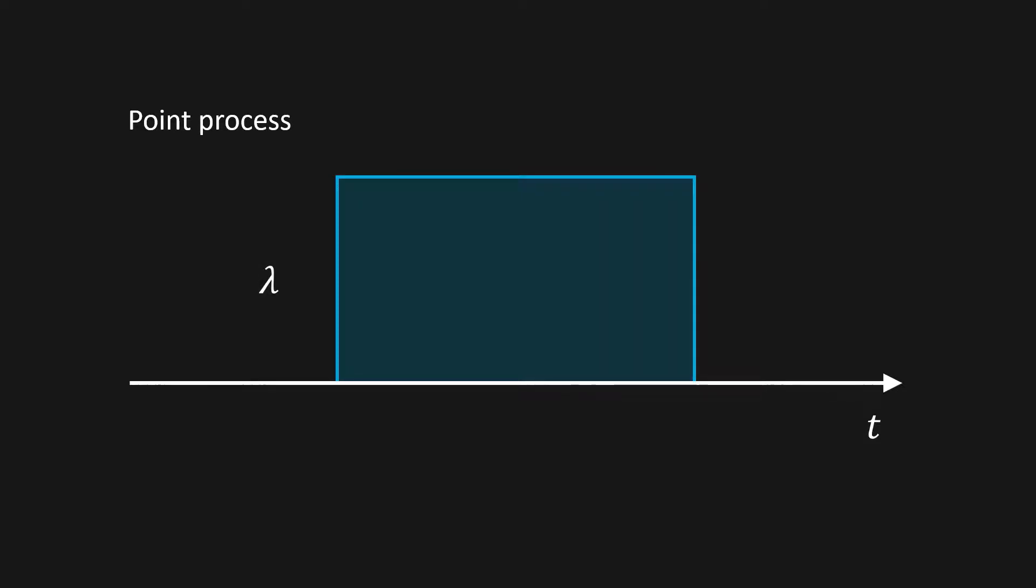In this example we have intensity lambda on blue interval so that we expect to see five points here. A single realization of the process are random points on this interval.